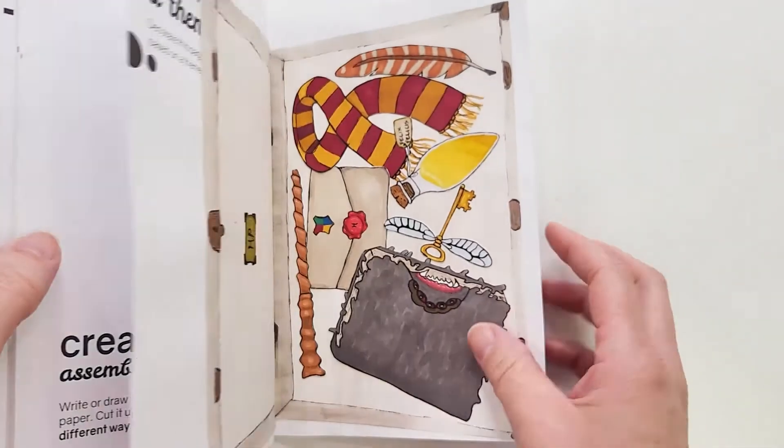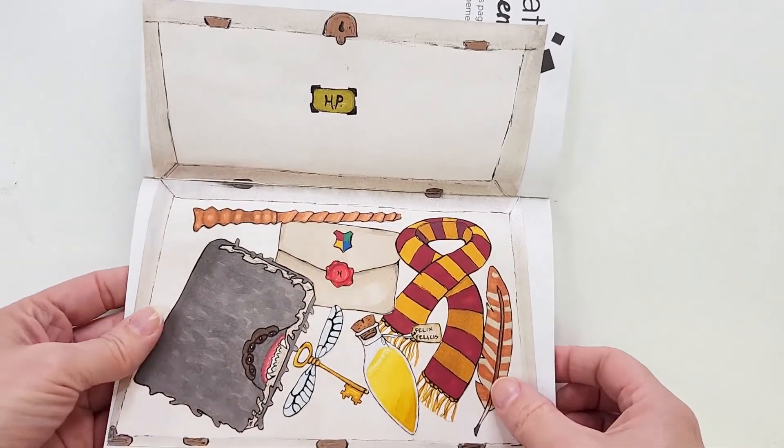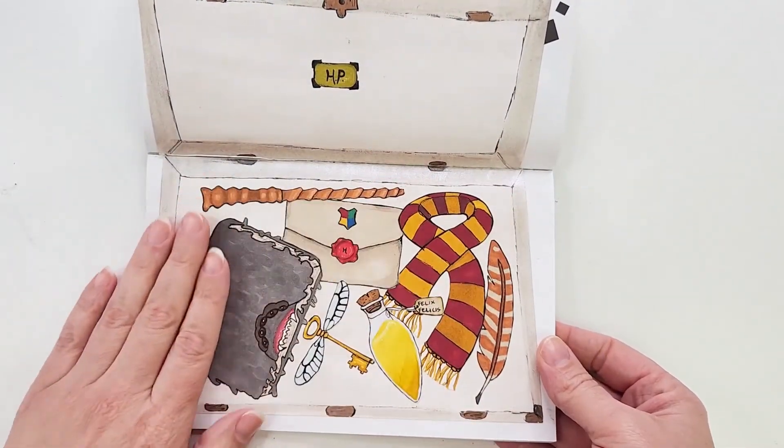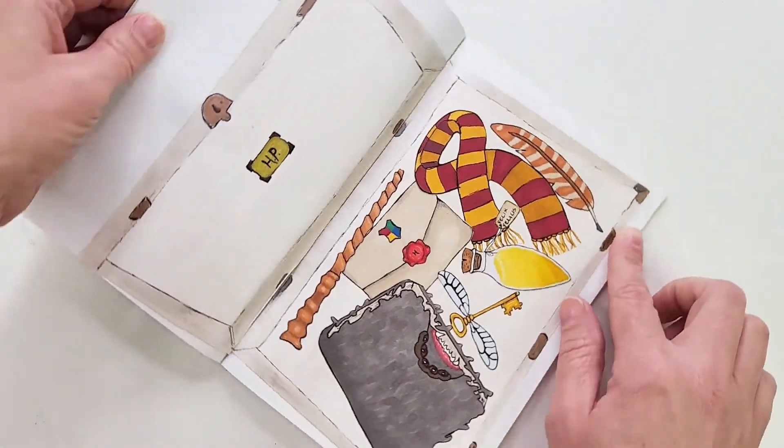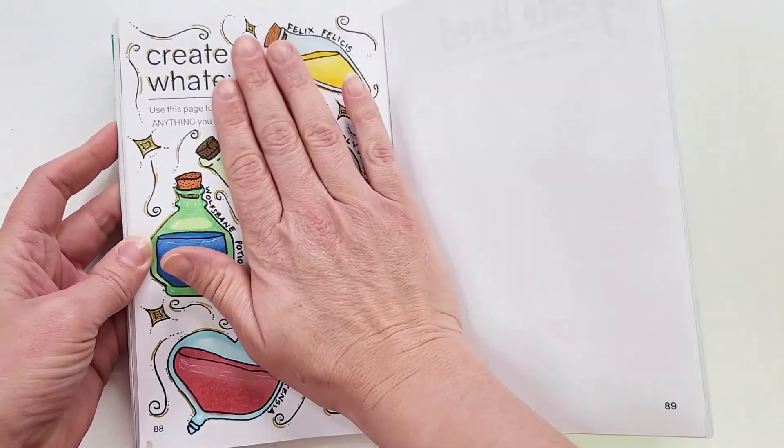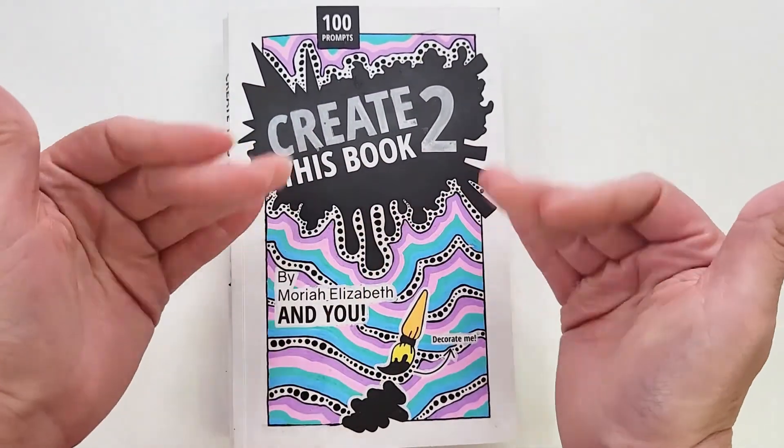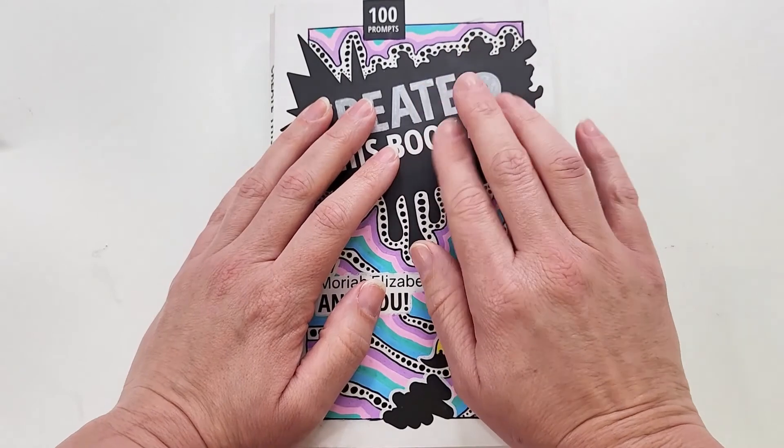So there we have it, two prompts this time both with the Wizarding World flavor. My trunk of Harry Potter themed items and a page of potions. Well thanks for joining me I'll catch you next time.